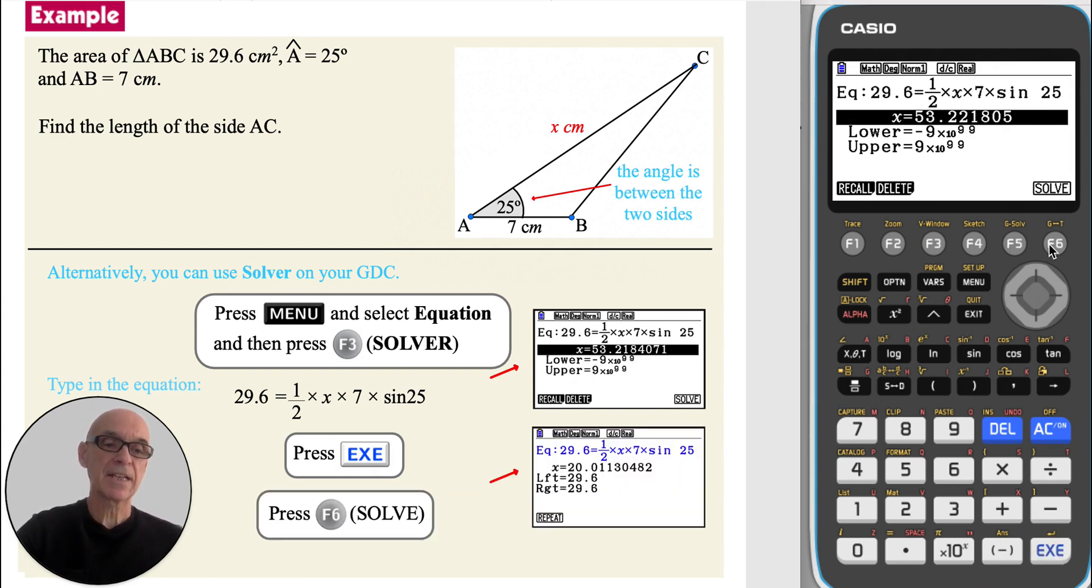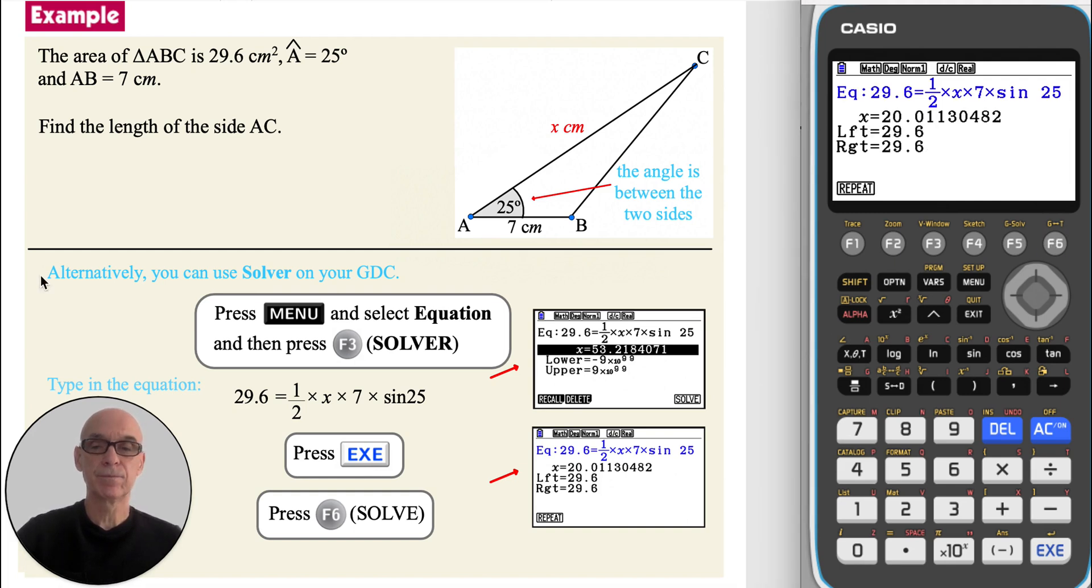Press execute to enter the equation and F6 to solve the equation. And write down the value of X. So the length of AC is 20.0 centimeters, correct to three significant figures, as we had before.